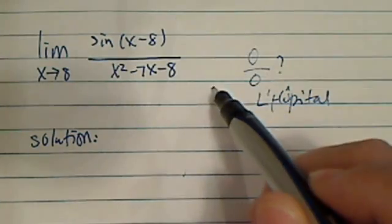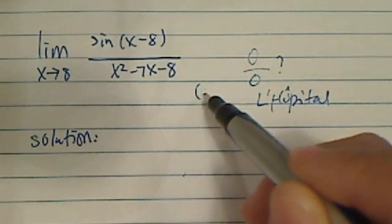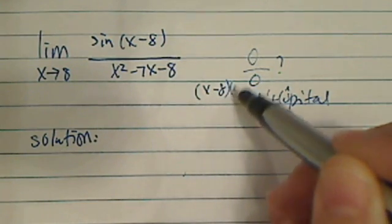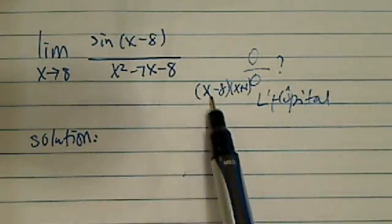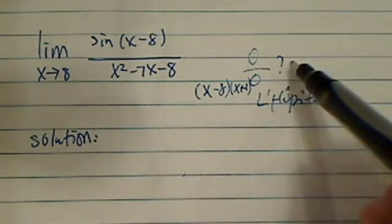On the bottom, if you were to factor this one a little bit, let's do it on the side. You have x minus 8 and x plus 1. So when x is close to 8, then you have a 0. So indeed, this one is checked.